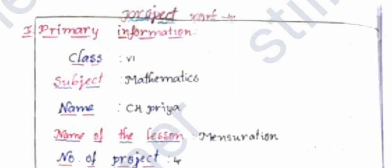In this video, we are going to talk about the math project work for sixth class. In the first section, you have to write down the preliminary information—your name, class, subject, and name of the project.